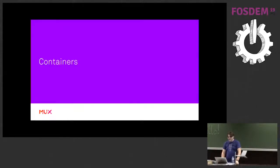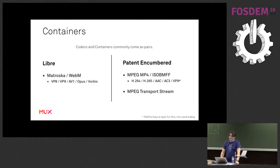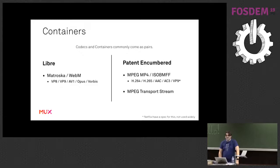A quick conversation on containers. Containers and codecs generally come as pairs. For a Libre container, I would tend to look at Matroska or WebM, which is a subset of Matroska. Generally you'll find VP8, VP9, AV1 video with Vorbis and Opus in there. For patent-encumbered, we're talking about MPEG technologies again - MP4, the ISO Base Media File Format, or transport streams, and you'll find the MPEG codecs in there. There is also a spec for VP9 in ISO BMFF, which is actually one of the things Netflix uses quite a lot of.